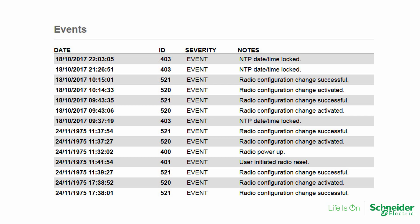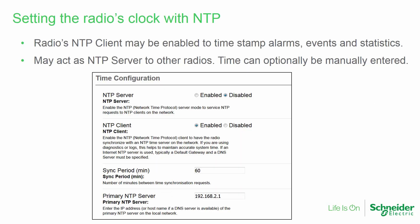Here we see events timestamped with a default time and date beginning in 1975. This radio's NTP client was configured to get the correct time from an NTP server, so after an NTP date-time locked event, it can be seen the time has now been updated. For the event log and statistics log to properly timestamp events, the radio must know the correct time. It is possible to manually enter the date and time into one radio configured as the NTP server, but over the long term it's easier to use a computer with network connectivity to automate the process. If this is done, ensure that careful security precautions are taken to isolate the radio system.